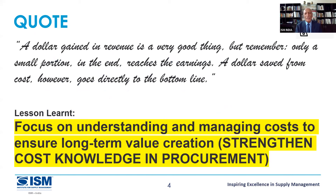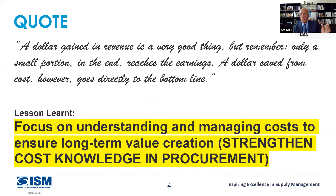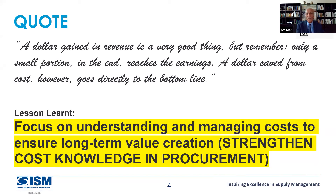If I'm saving a dollar, it's a very good thing — but remember, the small portion at the end reaches the bottom line. If I'm increasing sales by $100 million, the profit margin that comes out may be $10 million. But that same $10 million saved in procurement goes straight to the bottom line. So your $10 million saving is equal to a $100 million increase in revenue — that shows the importance of procurement.